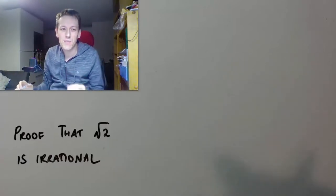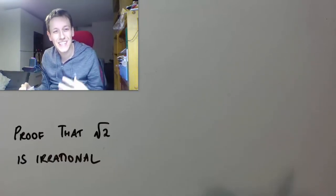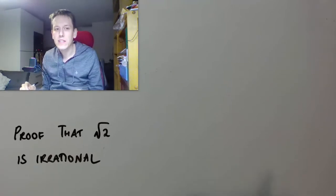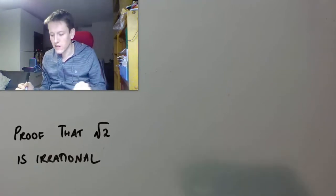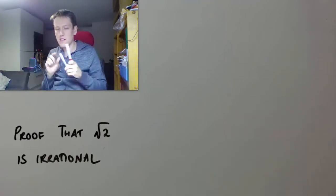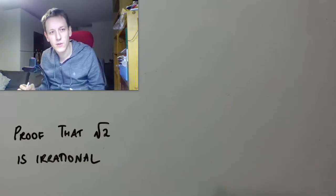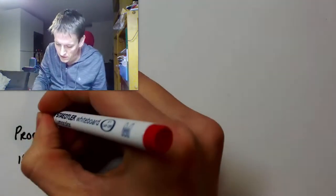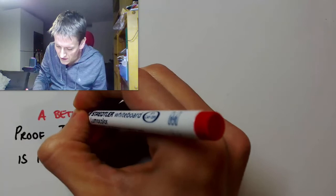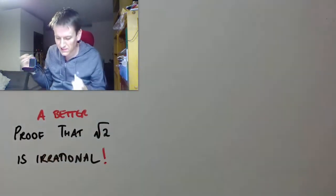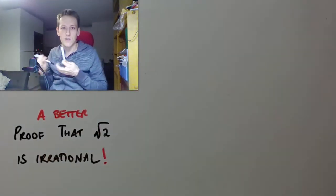Hi, in this video we're going to give a proof that the square root of 2 is an irrational number. I want to do it in a way that's slightly different to the standard proof of this result, that I've always found just to be slightly unsatisfactory, and there is a new way of doing it. So actually, maybe why don't I call this a better proof that the square root of 2 is irrational.